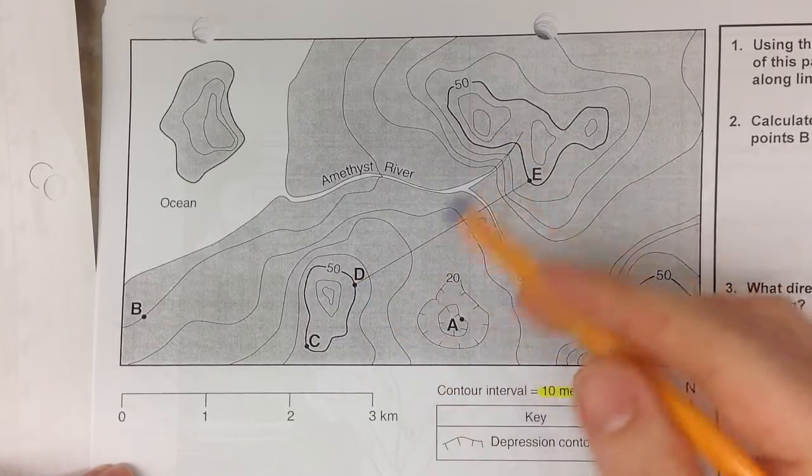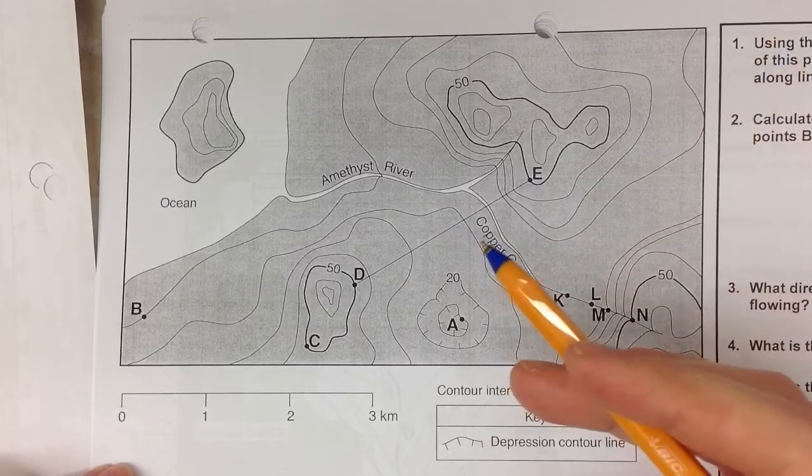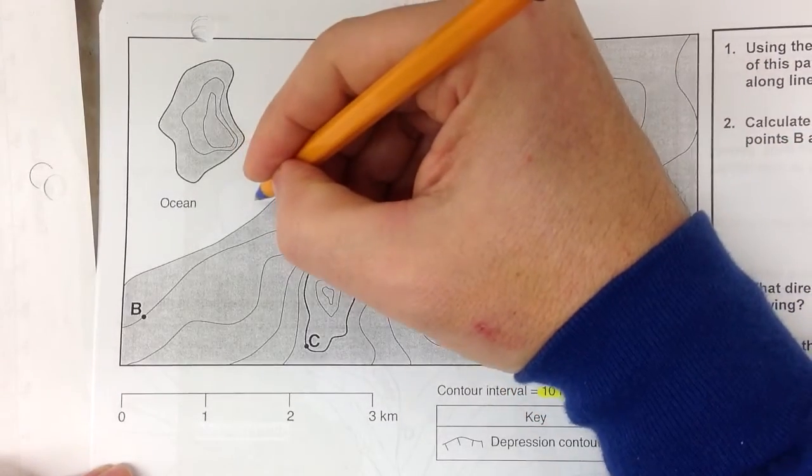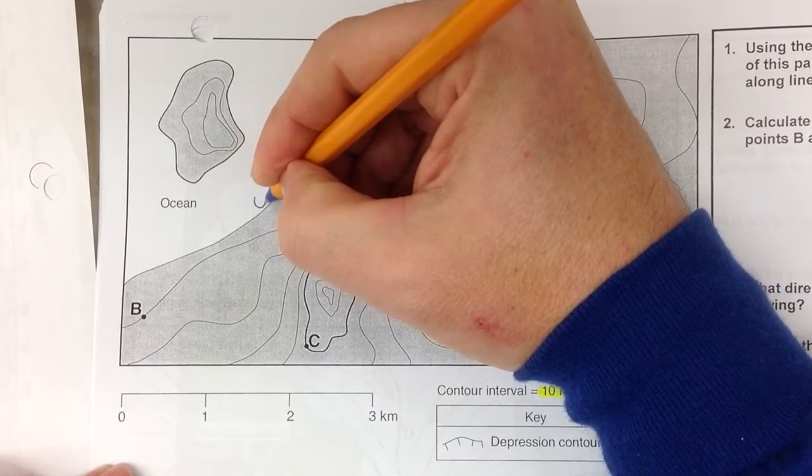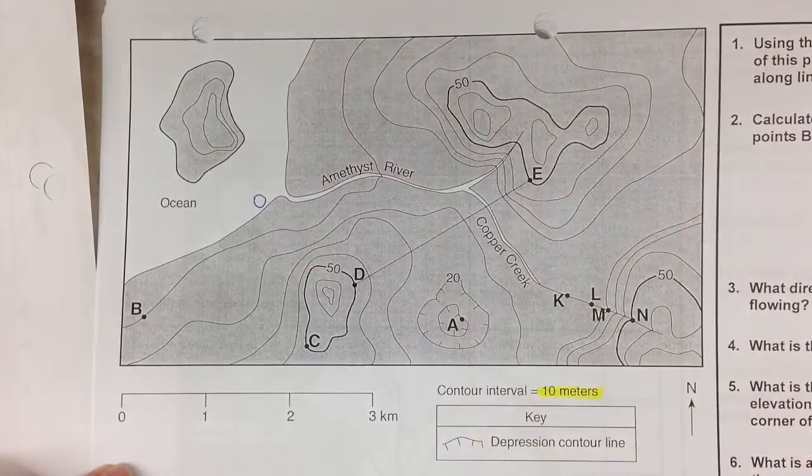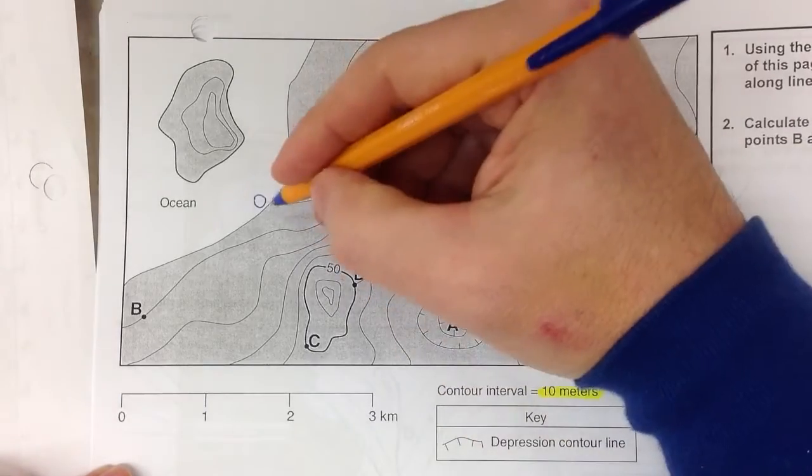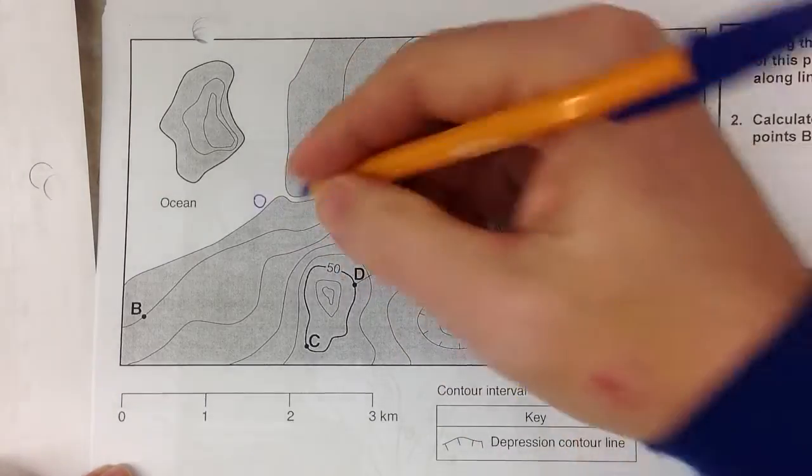From here you can figure out if you're going uphill or downhill. I'm going to start over here near the ocean because that's an easy point to start. When you're starting near the ocean it's always starting at zero elevation, whatever your units are. Then from there, going up by 10s.